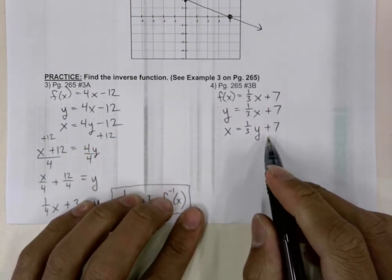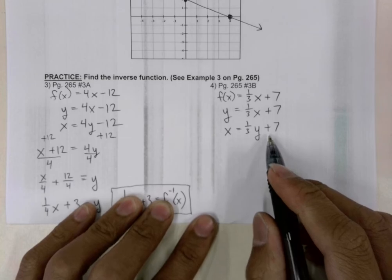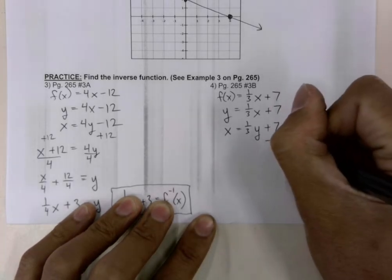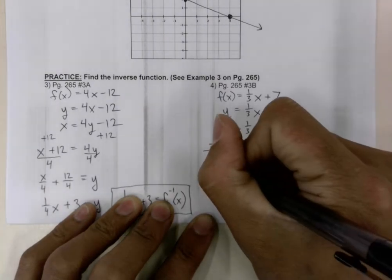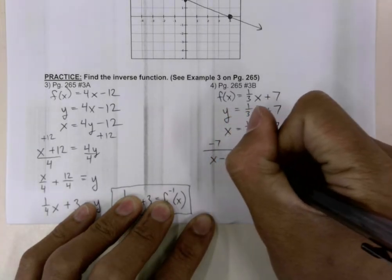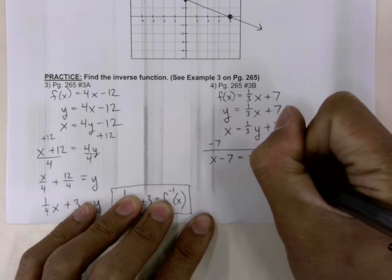And we're going to solve for y. So to do that, I'm going to subtract 7 from both sides of the equal sign. And that leaves us with x minus 7 is equal to 1 over 3y.